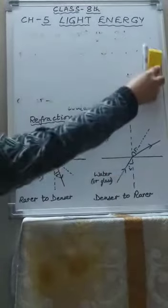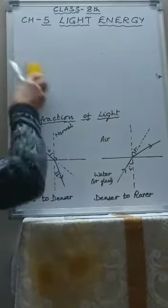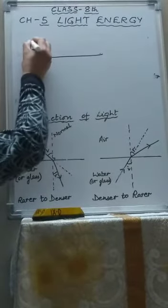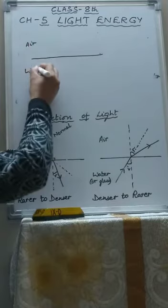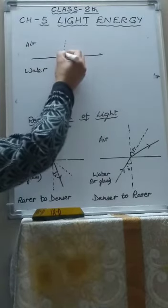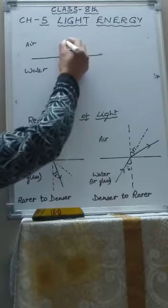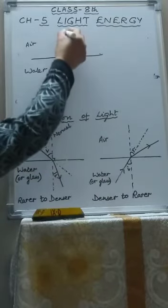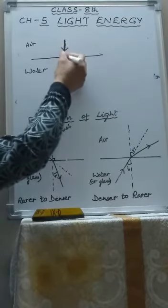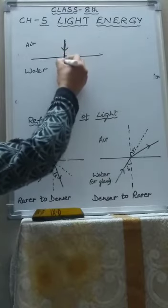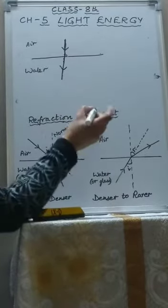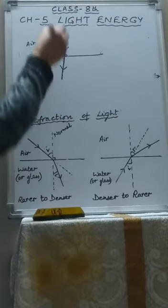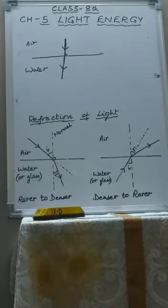One more very important thing: if light falls perpendicular — perpendicular means at 90 degrees — then how will it pass? Suppose this is the surface separating two media, air and water or glass. This is the normal, a line at 90 degrees. Suppose the ray of light is falling normally, like this — it is making an angle of 90 degrees. Then the light will pass straight; it will not bend. When light falls normally, it passes undeviated — no change in its path; it passes straight through to the other medium.